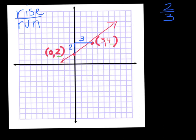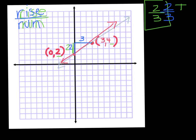Today I'm going to show you another way to find slope by just looking at the two coordinates. To do that, we're going to use a formula called change in Y over change in X.